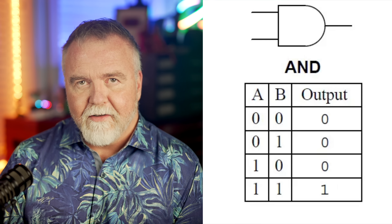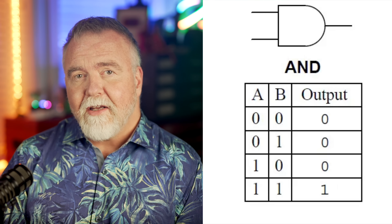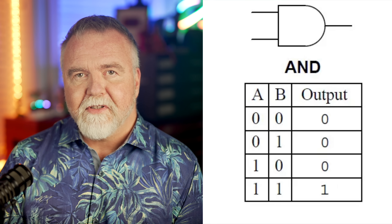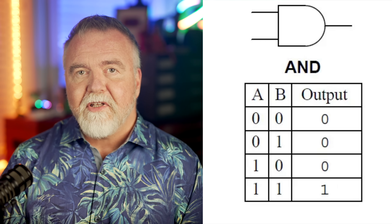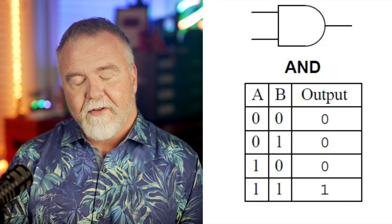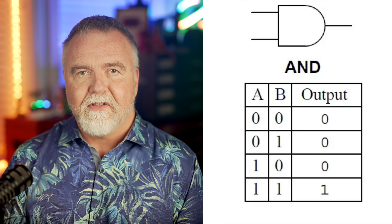AND gate. An AND gate takes two or more signals and produces an output signal only if all the input signals are high; otherwise the output is low.